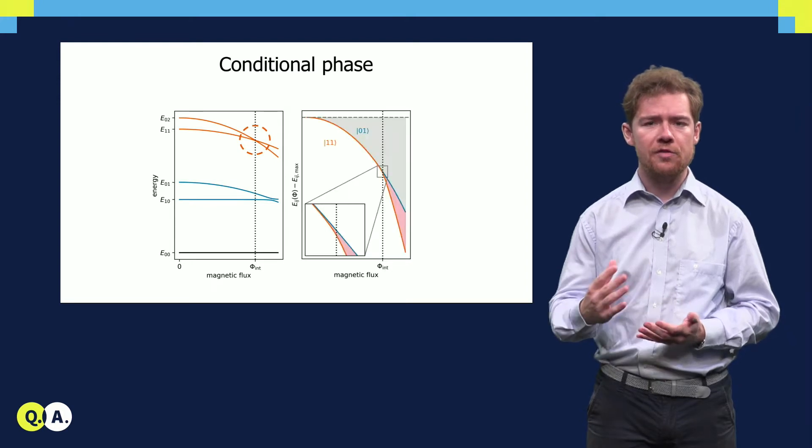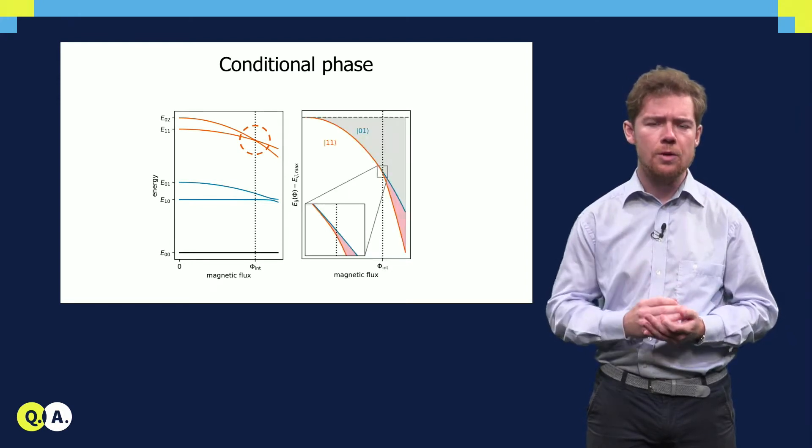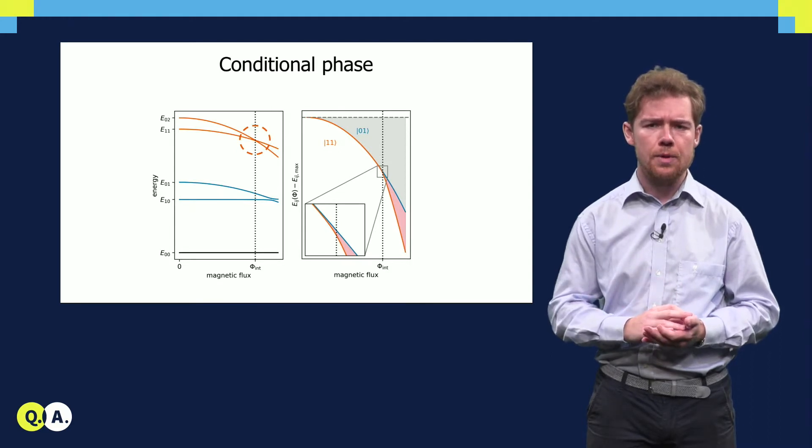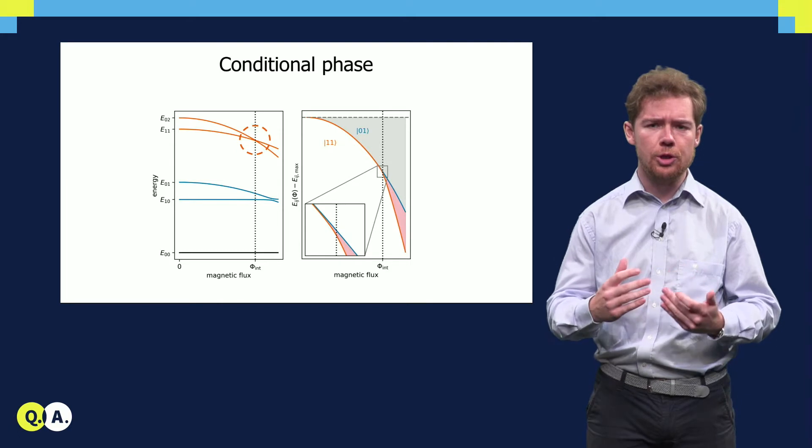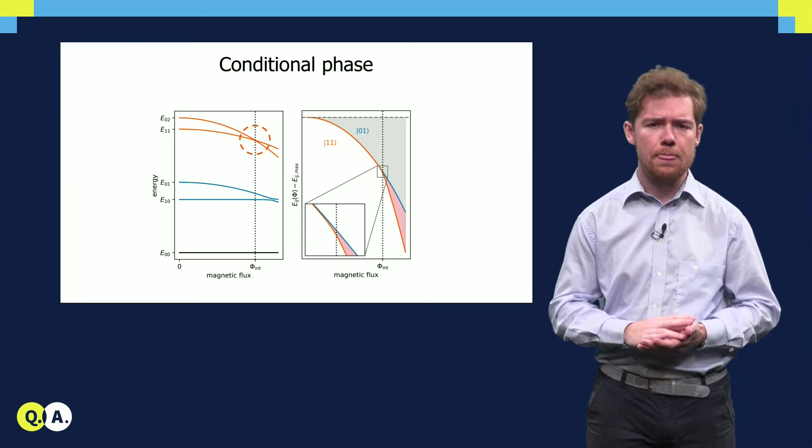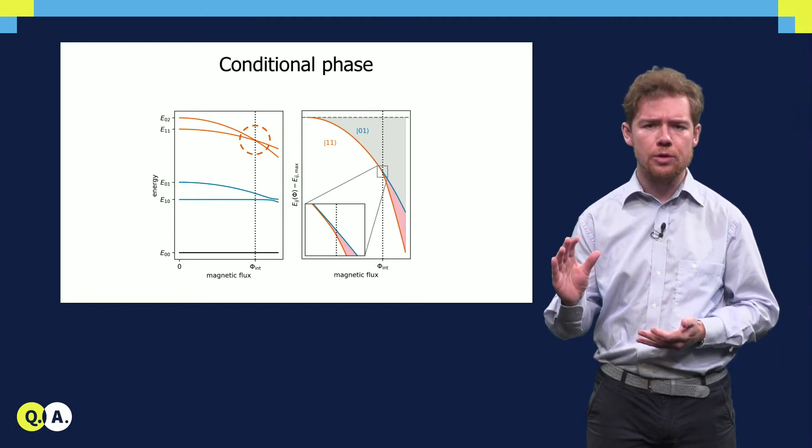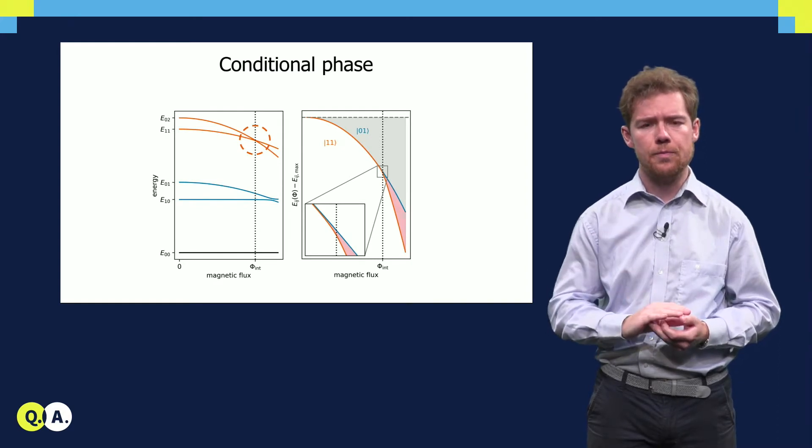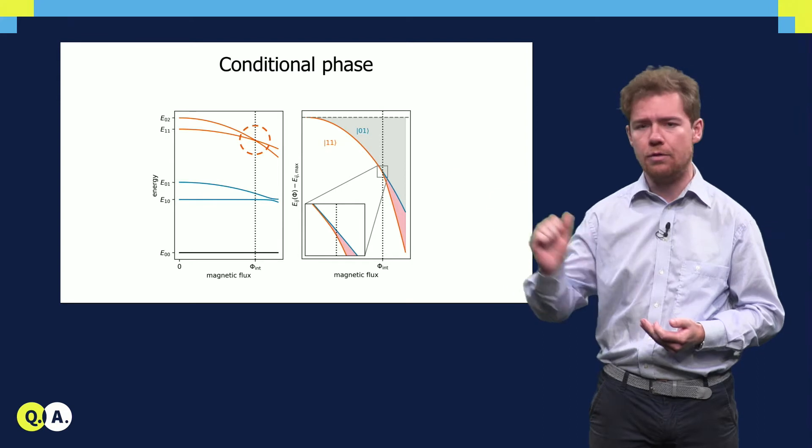The amount of phase that the target qubit picks up is most evident when the 1-1 and 0-1 level diagrams are overlaid. By expressing them in terms of detuning with respect to their maximum energy, it can be seen that the detuning of the target qubit is different based on the state of the target qubit. This difference is marked in red over here.